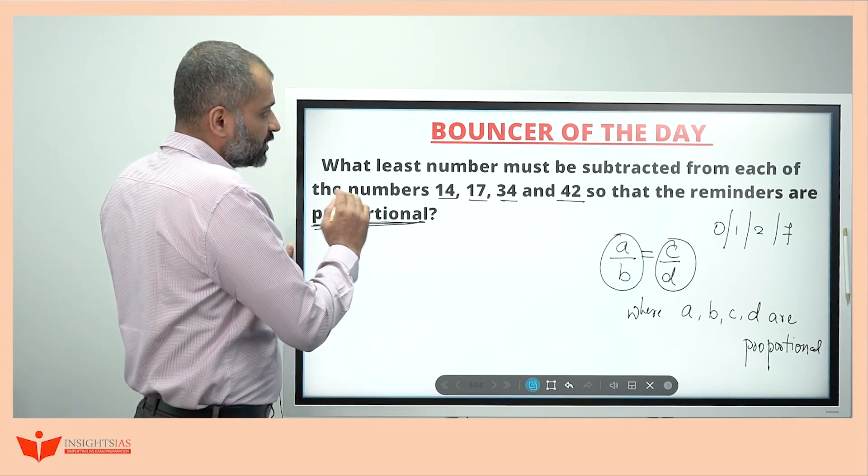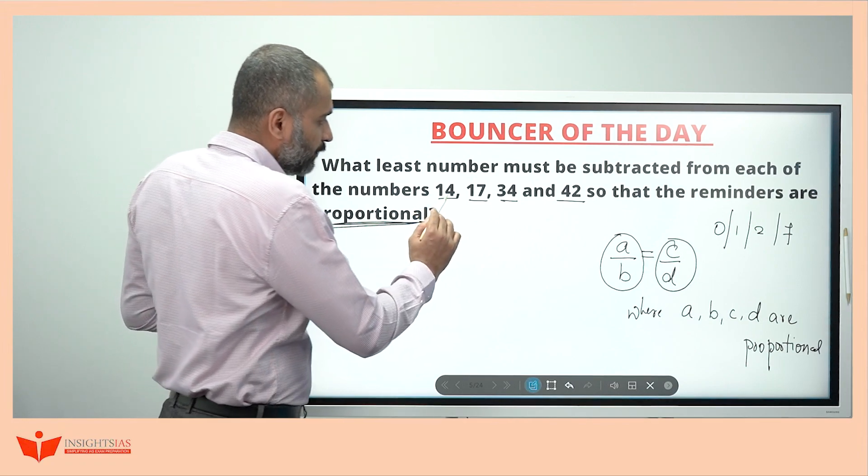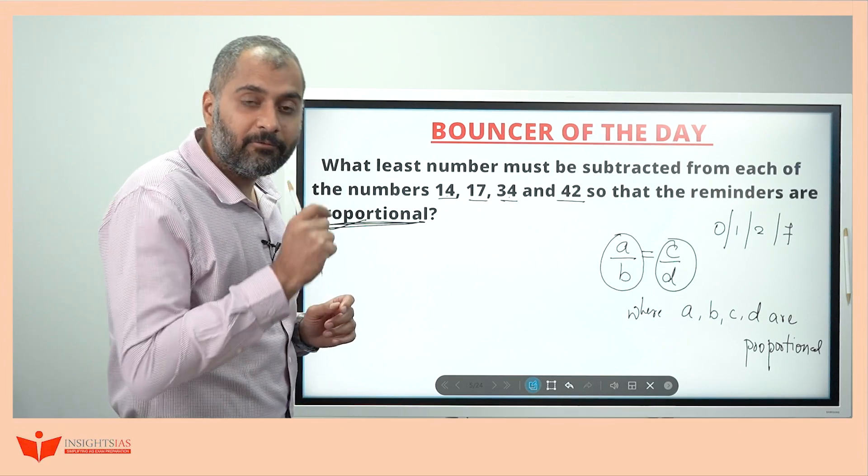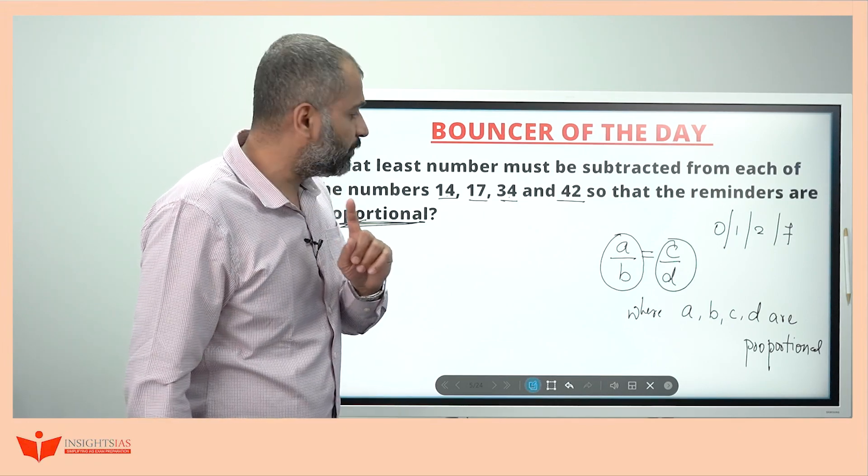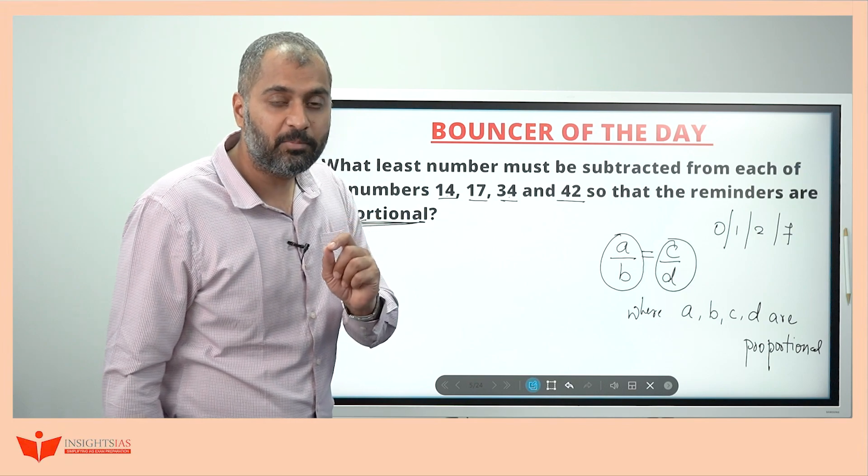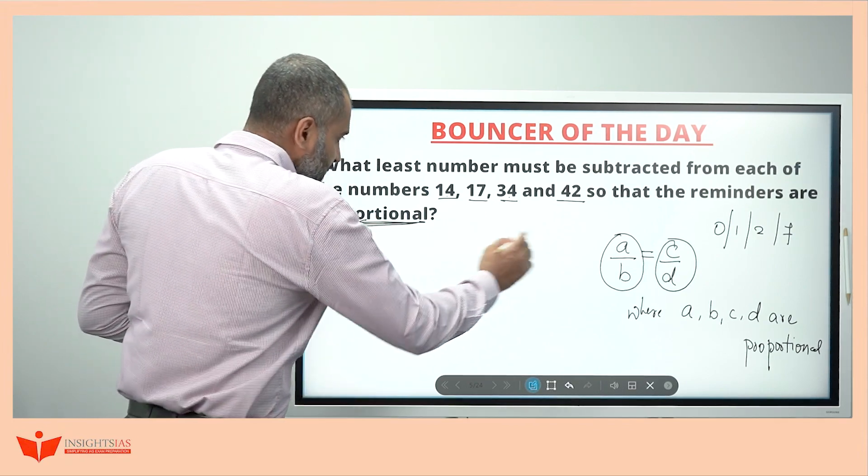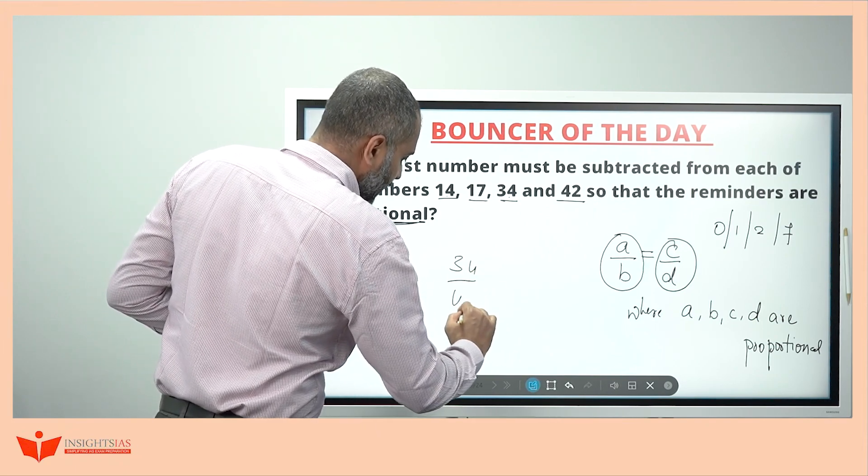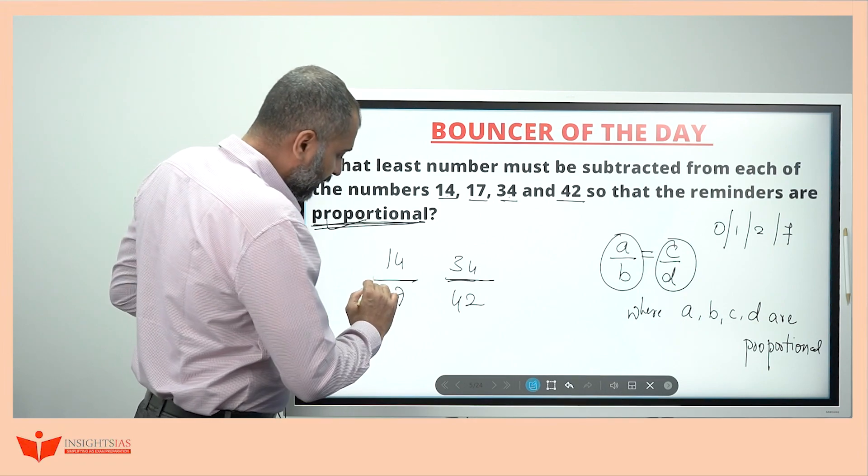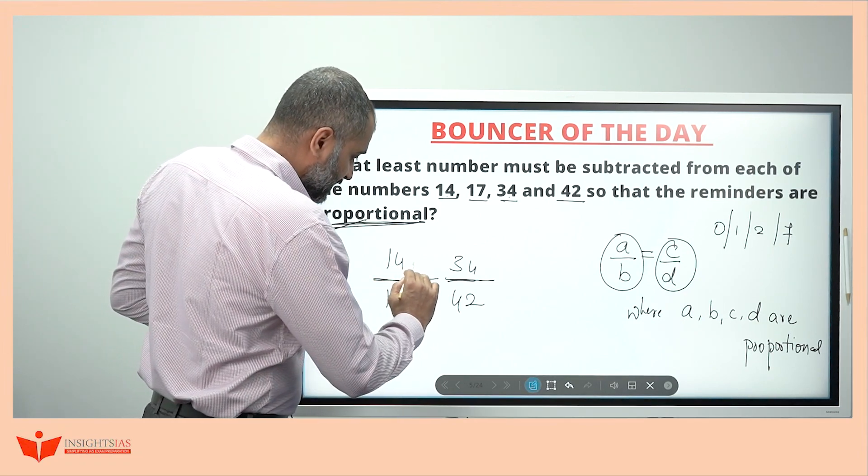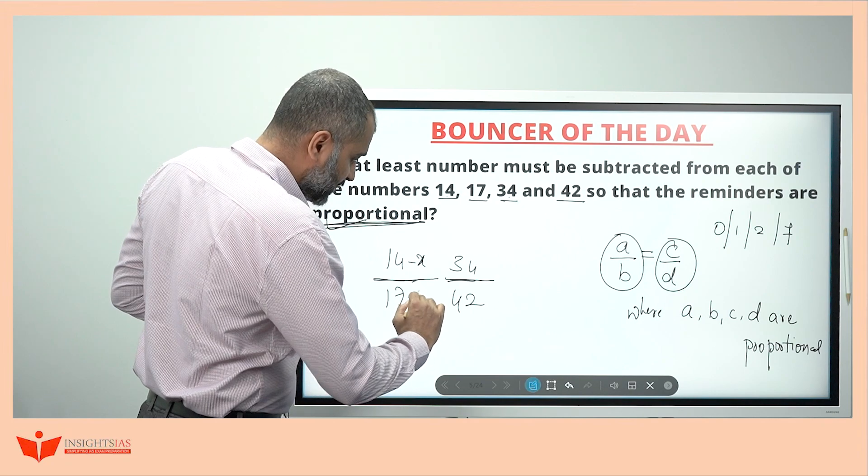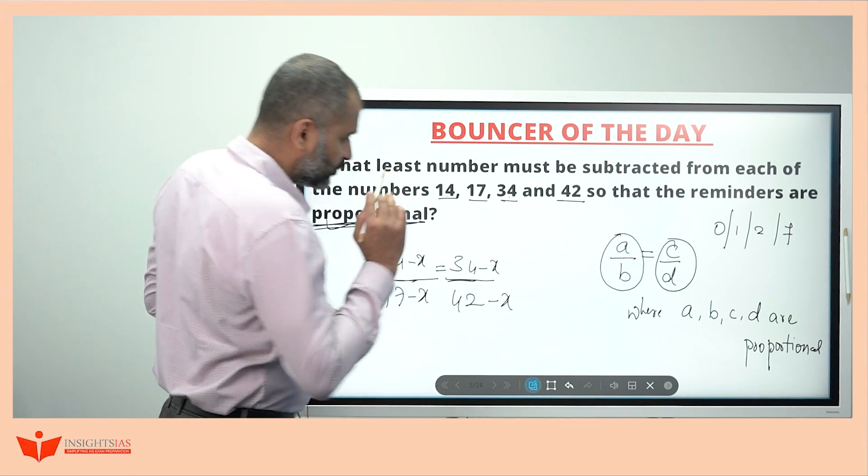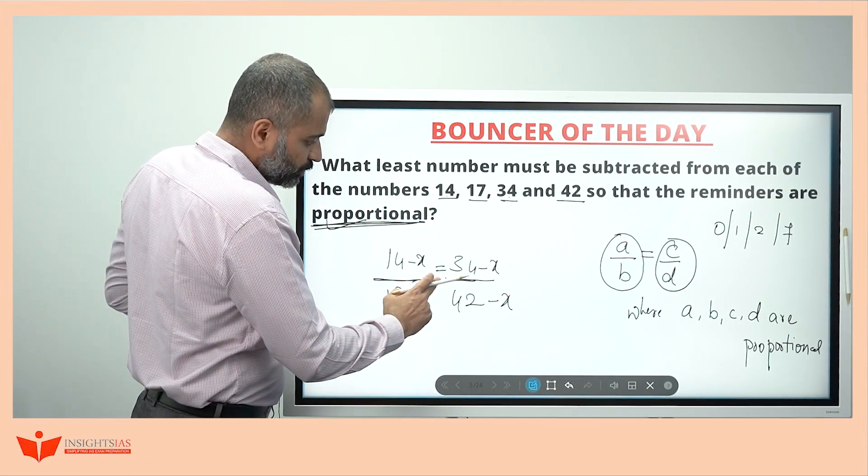See, this happens. What least number must be subtracted from each of the numbers 14, 17, 34 and 42, so that the remainders are proportional? Means after subtracting one common number from each, these variables becomes proportional. Let us consider this as 14, 17, 34 and 42. A, B, C, D are here. When you are subtracting the same variable from each of these numerical values, then this becomes proportional.